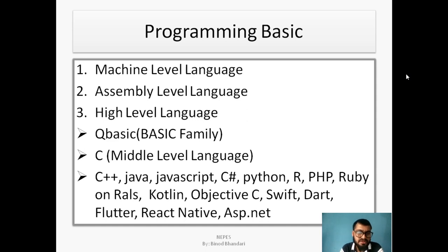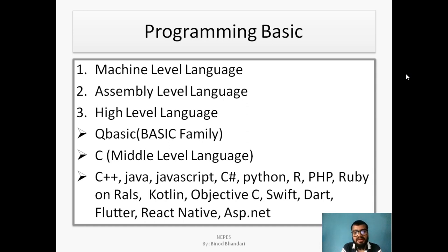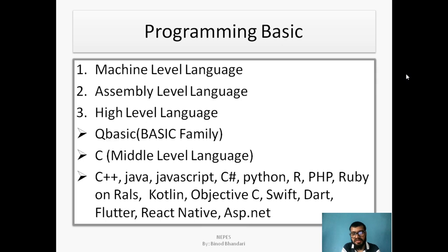C++ is an object-oriented programming language used for developing software, desktop applications, and console applications. Java is a general-purpose programming language used for embedded systems, console applications, and web applications. JavaScript is especially used for front-end web design. C# is used for console applications and desktop applications, and also gaming. Python is generally used for artificial intelligence, data science, and web design.